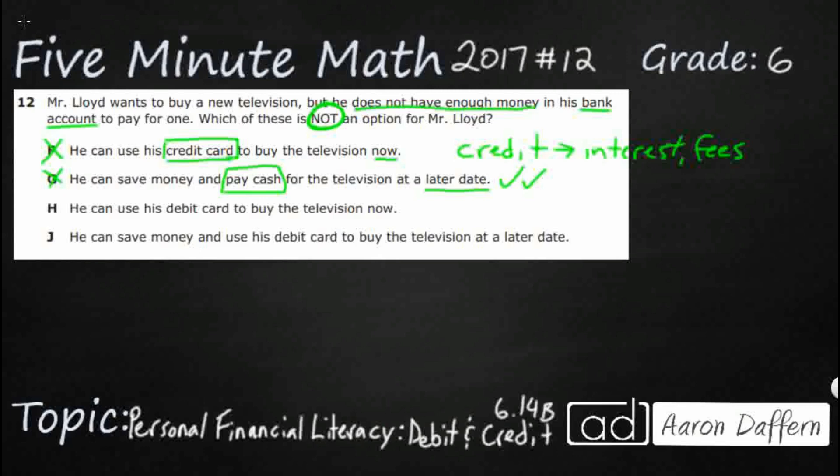Let's look at H. He can use his debit card, so there's our payment method, to buy the television now. Now this is where we're going to have a little bit of problems. There's a big difference between a debit card and a credit card. They both look exactly the same. They both might have a bank on it and they both have a Visa or MasterCard symbol.